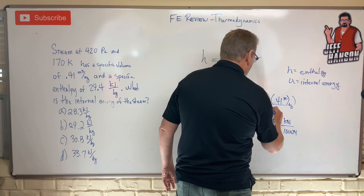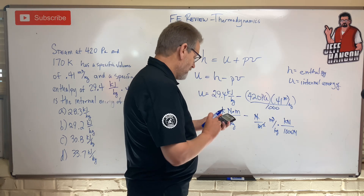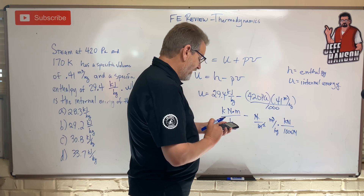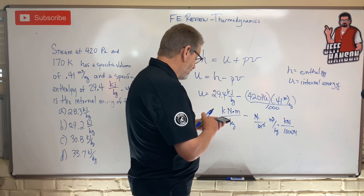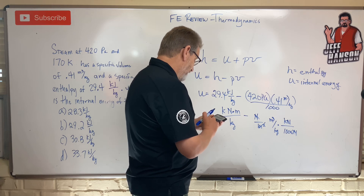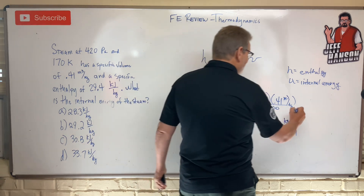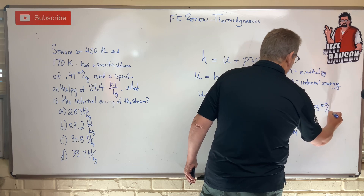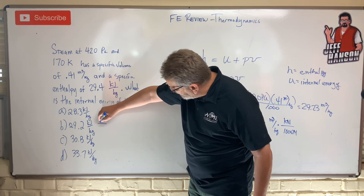So: 420 times 0.41 equals 172, divided by 1000 equals 0.172. Then u equals 29.4 minus 0.172, which gives approximately 29.23 kilojoules per kilogram. And there's our answer — answer B.